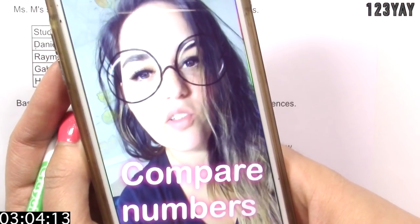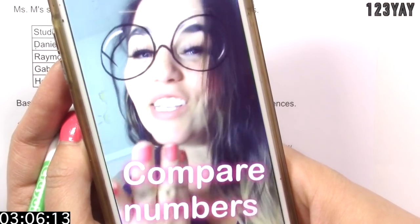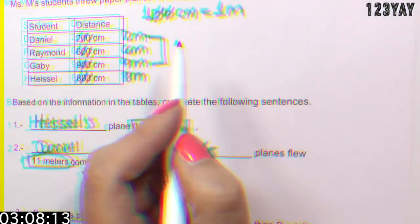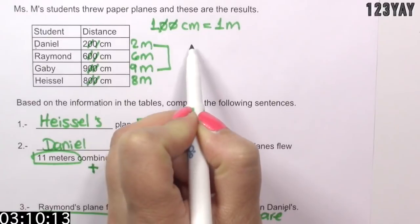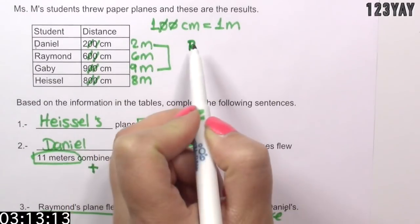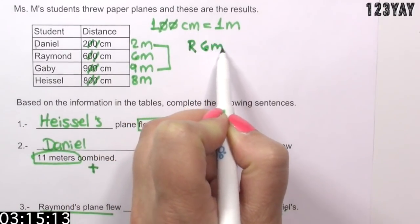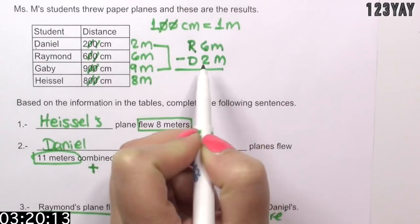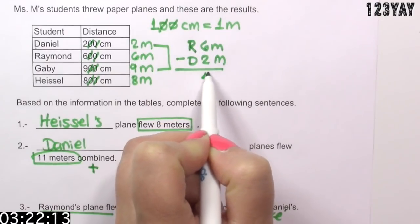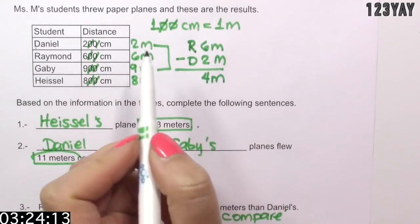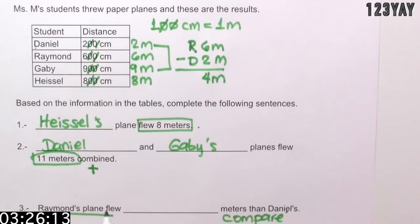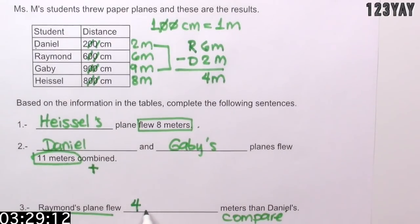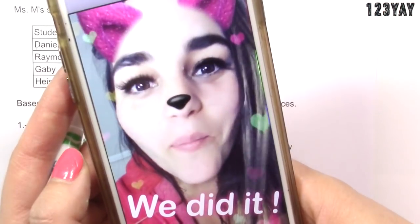Tip time. When you want to compare two numbers and find the difference, you need to subtract. Let's do that. Let's put the biggest number before which is Raymond's 6 meters minus Daniel's 2 meters. And the answer is 4 meters. Raymond's plane flew 4 more meters than Daniel's.